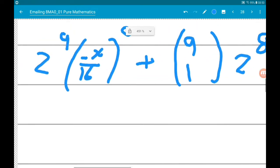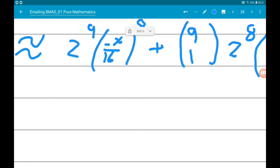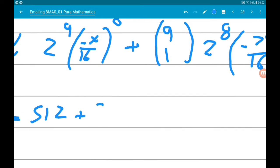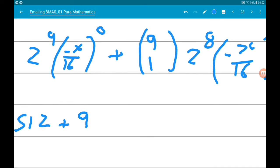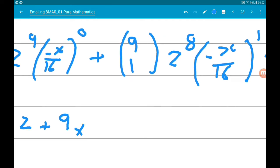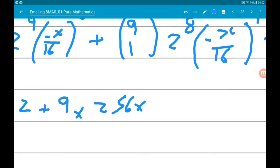So 2 to power 9 is 512. The minus x over 16 to the power of 1 is just 1, and 9 choose 1 is 9. Any number choose 1 is that number. 2 to the power of 8 is 256, and then minus x over 16 to the power of 1 is 16.